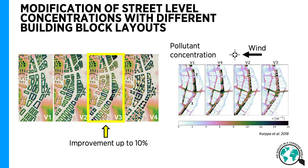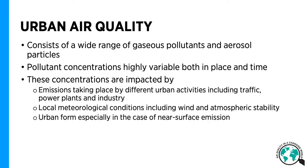This provides an example of how simply changing the urban topography or urban structure can impact on the air pollutant distributions in an urban area. As a summary, urban air quality consists of a wide range of gaseous pollutants as well as aerosol particles.